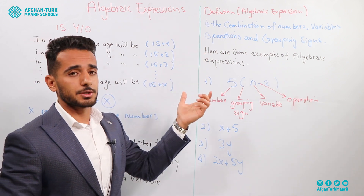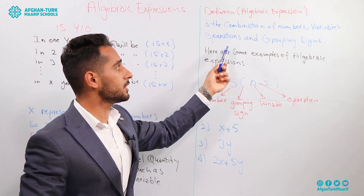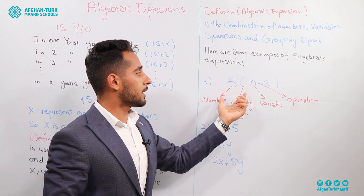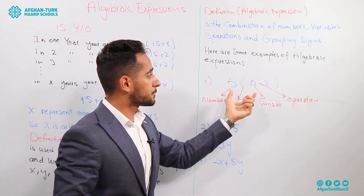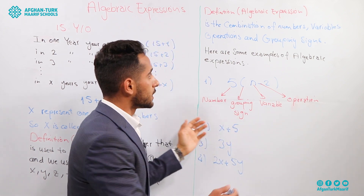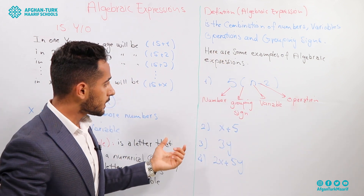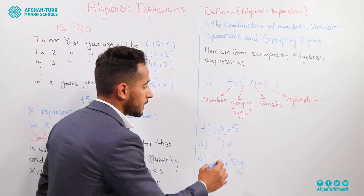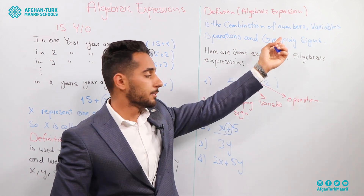Let's talk about the specific definition for algebraic expression. An algebraic expression is the combination of numbers, variables, operations, and grouping signs. For example, 5 times (N minus 2): here 5 represents a number, the parenthesis represents the grouping sign, N represents the variable, and minus represents the operation. The combination of these 4 parts is called an algebraic expression. Another example: X plus 5, where X is the variable, plus is the operation, and 5 is the number.